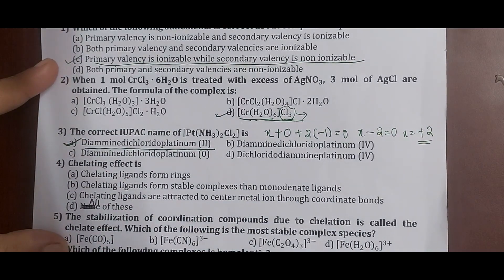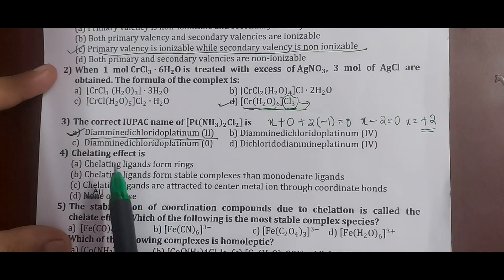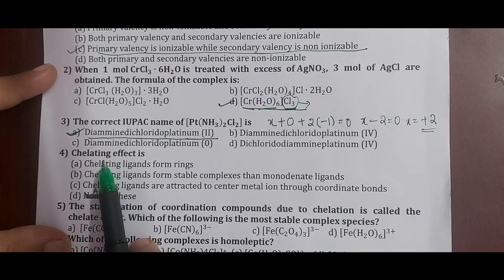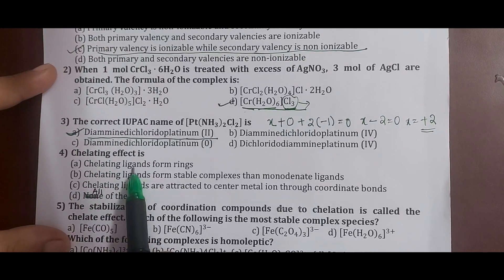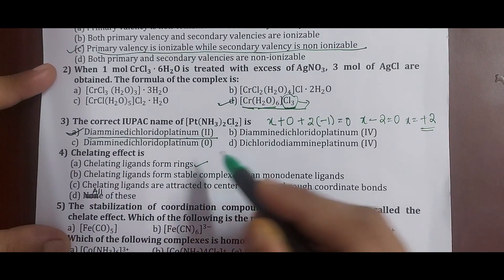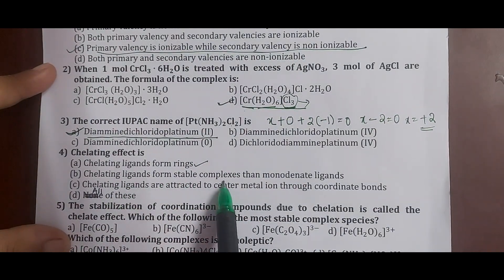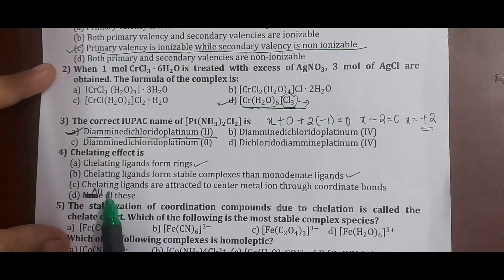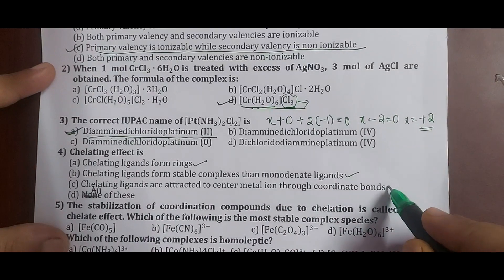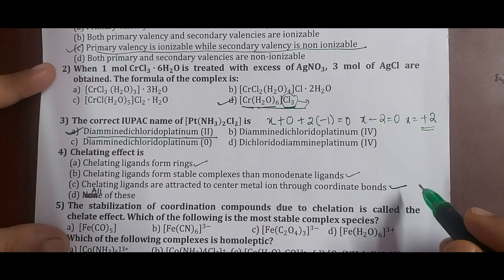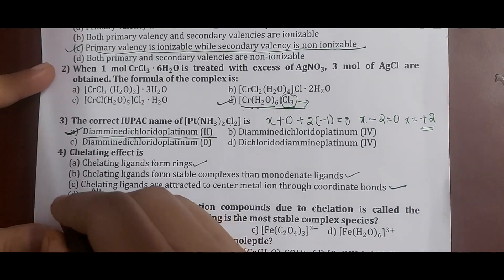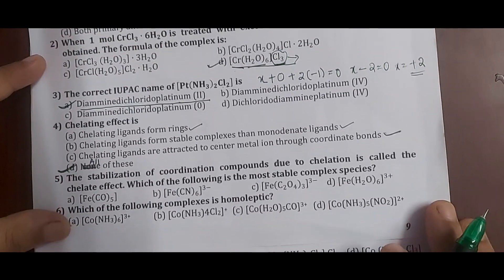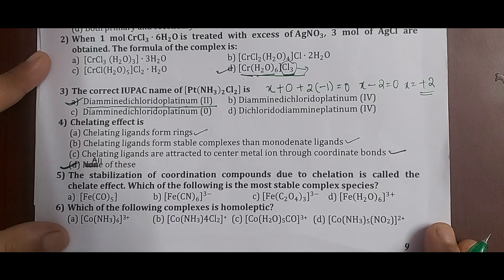Question 4 is about the chelating effect. Chelates are ring-like structures formed by polydentate ligands having two or more donor atoms. Chelating ligands form stable complexes — more stable than monodentate ligands — due to ring-like structures. Chelating ligands are attracted to the central metal ion through coordinate bonds. All of these statements explain the chelating effect, so the correct answer is option D: all of the above.